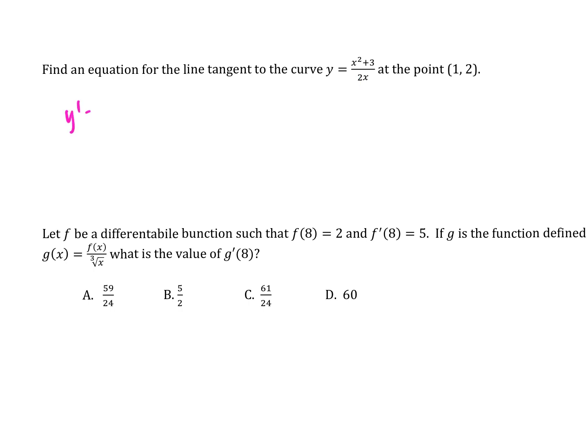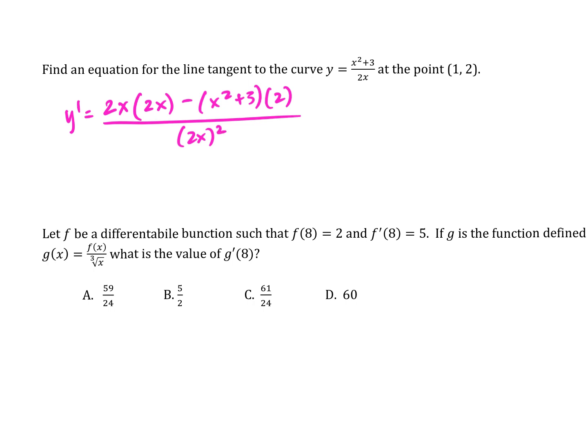Starts with me every time — the world revolves around me. What's low? Two X. Low first times the derivative of the higher. Two X. Two X again, right? Low D high minus — because Roni said with division we're subtracting — low D high minus high, X squared plus three. Put that in parentheses or AP is going to give you no point — it has to be distributed. D low, which is two, all over two X to the second power. That's the slope, the Y prime at any X coordinate.